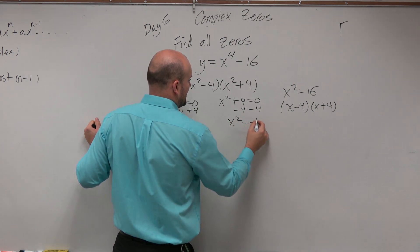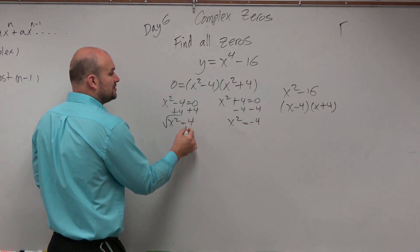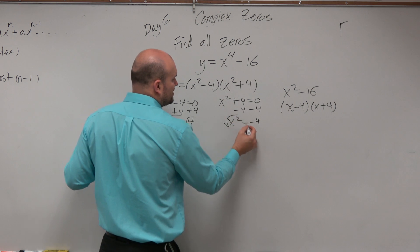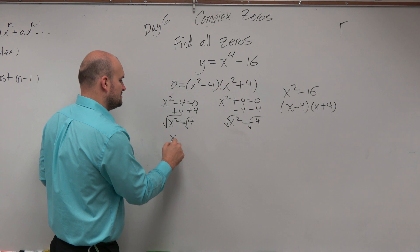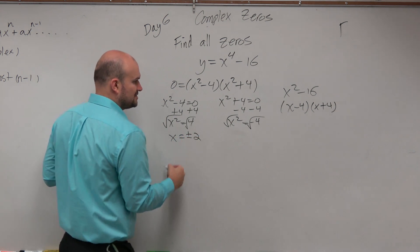x squared equals negative 4. So when I square root, please make sure you guys include plus or minus. x equals plus or minus 2.